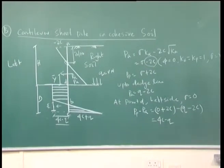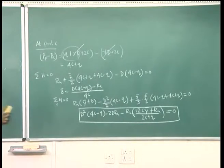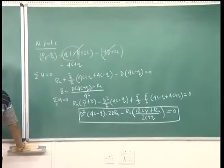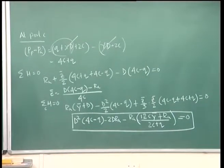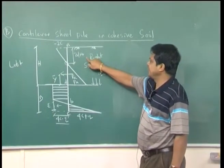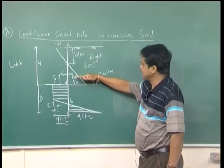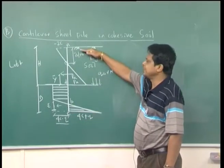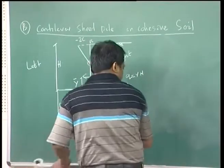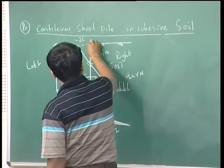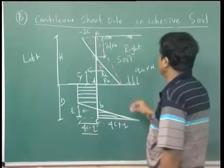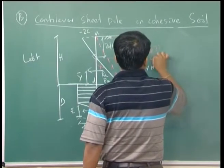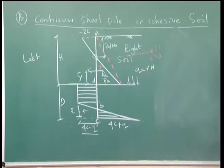Note: it is not necessary that both parts be clay. The condition is that the embedded depth below the dredge line should be in clay. If the soil above is cohesionless (φ soil, C = 0), the pressure distribution diagram for the top part will change accordingly, but below the dredge line it must be cohesive soil.